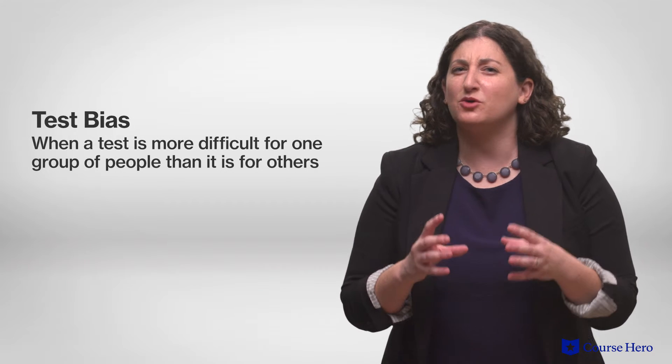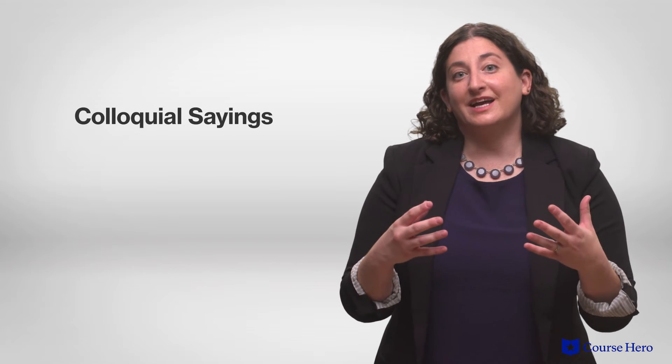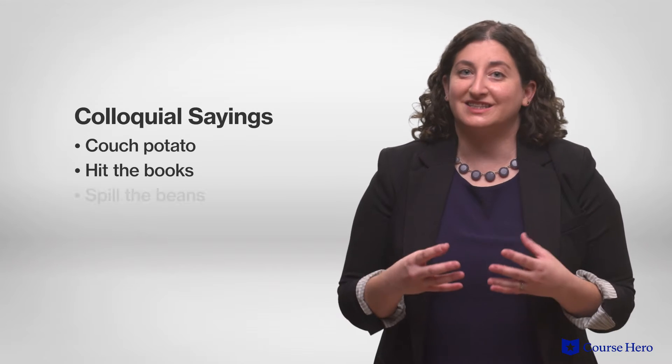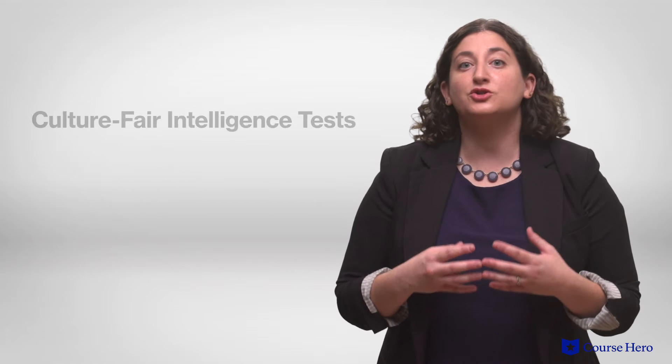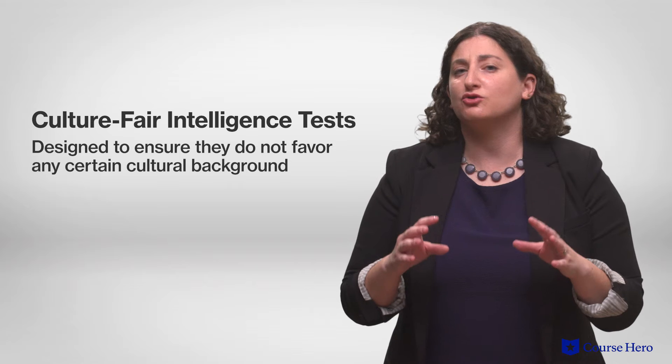Test designers also need to be on the lookout for test bias, which occurs when a test is comparatively more difficult for one group of people than it is for others. For example, test questions using colloquial sayings may disadvantage people who use English as a second language. Culture-fair intelligence tests are designed to ensure that they do not favor any certain cultural background over another. Tests such as Raven's progressive matrices, which focus on non-verbal abstract reasoning, and tests focusing on processing speed and mental rotation may lead to fewer biases.